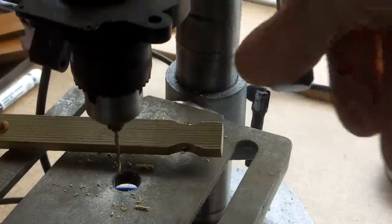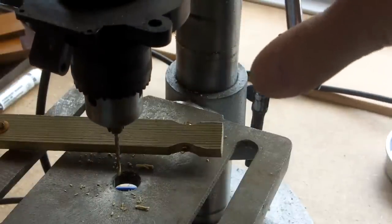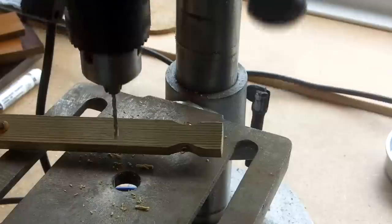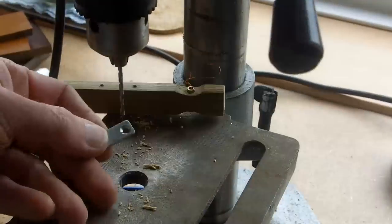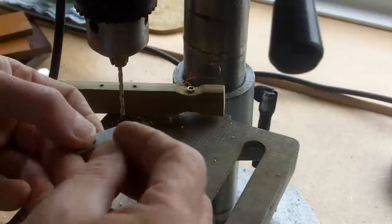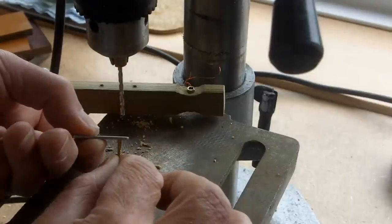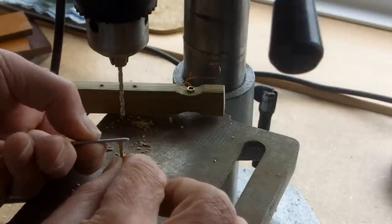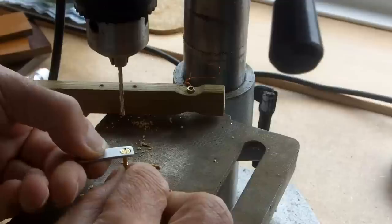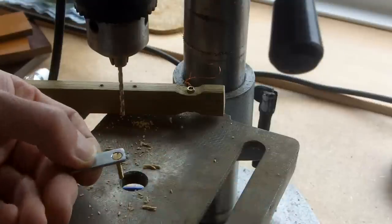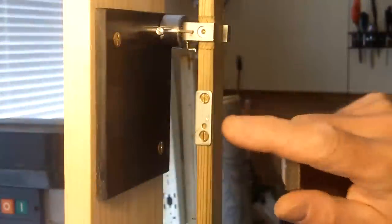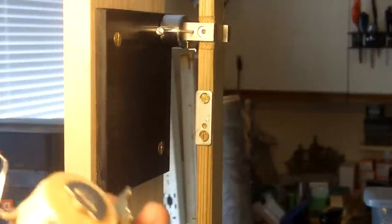And I'd set the depth gauge just to make sure I don't drill all the way through. So I've countersunk that bit of metal so the head of the screw is out of the surface area. So I've got my little armature in place there.